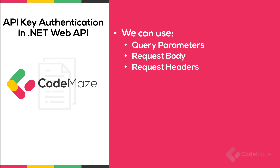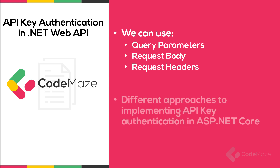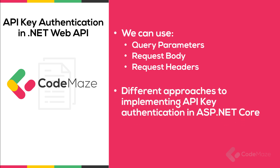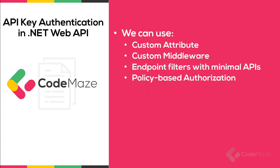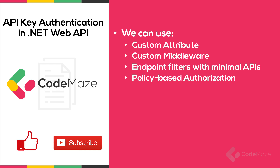Besides the different ways to pass the API key to the endpoint, there are also different approaches to implement API key authentication in ASP.NET Core. We can use a custom attribute, custom middleware, endpoint filters with minimal APIs, and policy-based authorization. I will show you all these approaches in this video.